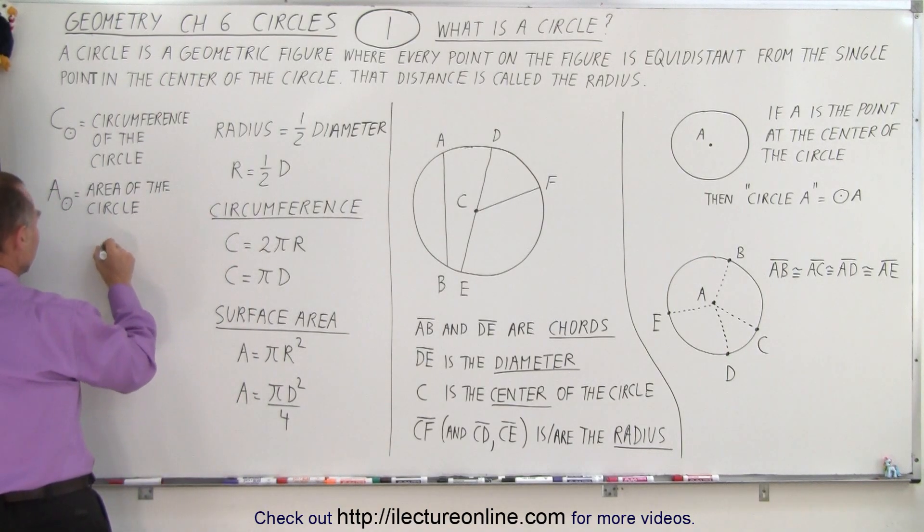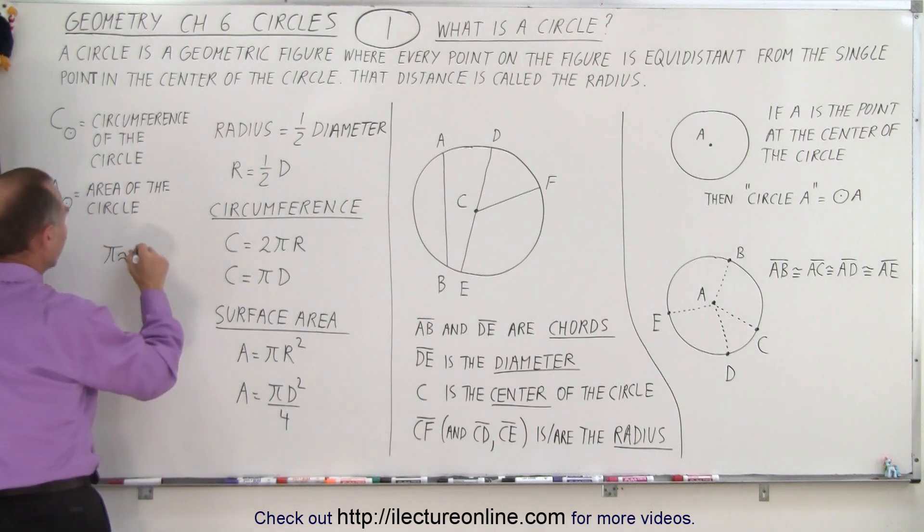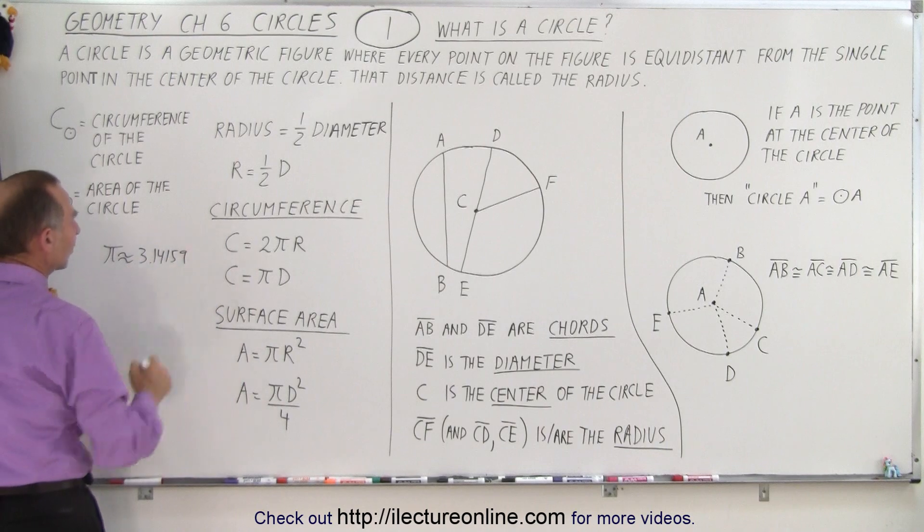so we can write that down somewhere. So π is approximately equal to, and this means approximately equal to, maybe I'll write it like this. There we go, that's probably better. About 3.14159 out to 5 decimal places.